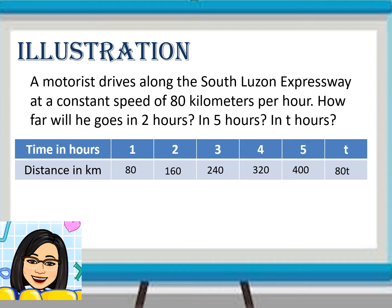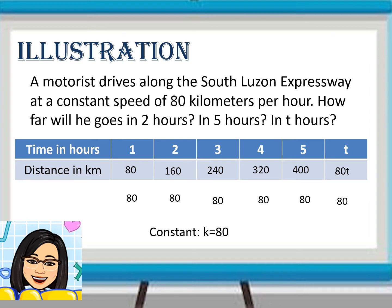Let us further observe the table. If the distance is divided by time: 80 divided by 1 gives 80; 160 divided by 2 is also 80; 240 divided by 3 is the same 80; 320 divided by 4 is also 80; the same with 400 divided by 5; and 80T divided by T is also 80. If this happens in the table, we can say we have a common constant — which is 80. This is how you check if a given table represents direct variation.